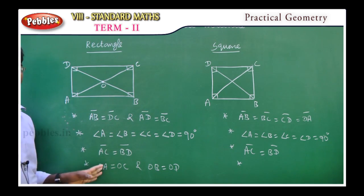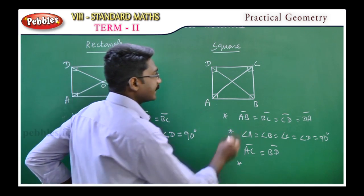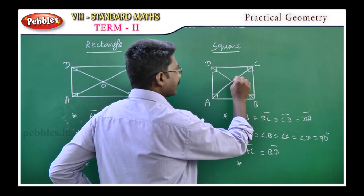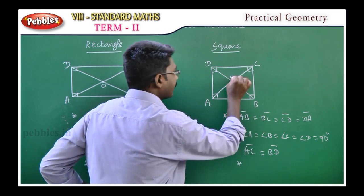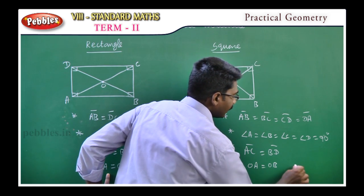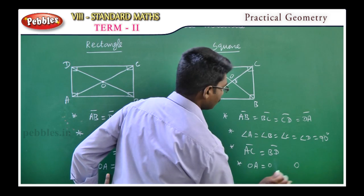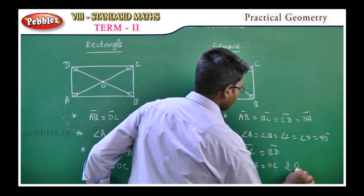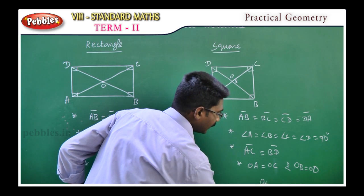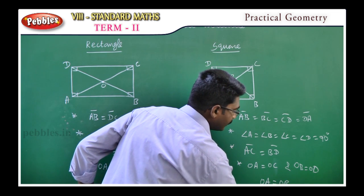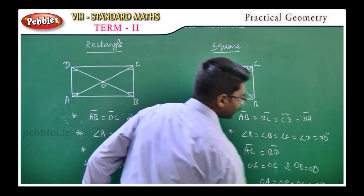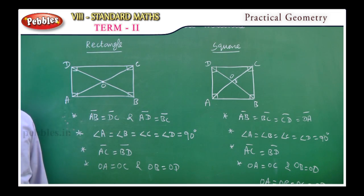Fourth property: the diagonals bisect each other at right angles. Therefore, at intersection point O, OA equals OB, OA equals OC, and OB equals OD. So all the line segments OA, OB, OC, OD are equal in length.